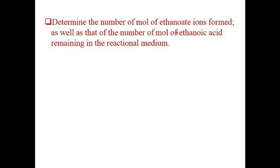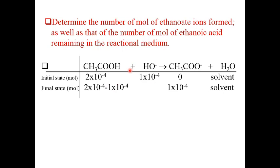The second question asks to determine the number of moles of ethanoate ions formed and the number of moles of ethanoic acid remaining. We draw the ICE table — this is a complete reaction, not an equilibrium one. At the initial state we have the given amounts. The OH⁻ reacts completely as the limiting reagent. The remaining ethanoic acid is 1×10⁻⁴ mol, and the conjugate base formed equals the same. At the end we have the weak acid and its conjugate base.